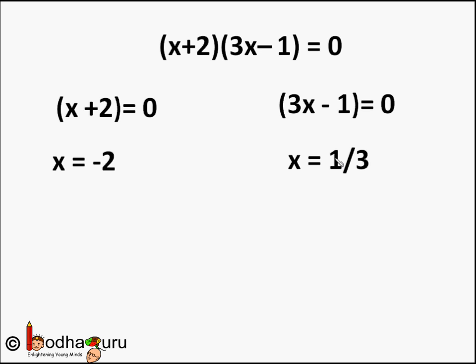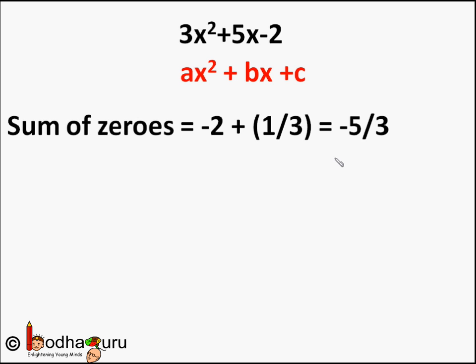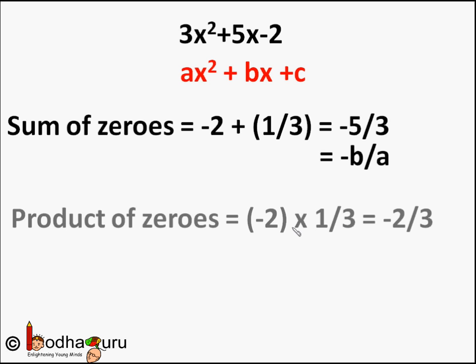So -2 and 1/3 are the two zeros of the polynomial 3x² + 5x - 2. Now let us find the sum of the zeros: -2 + 1/3. Taking 3 as the LCM, that comes out to be -5/3, which is the same as minus of the coefficient of x divided by the coefficient of x², that is -5/3. This equals -b/a.